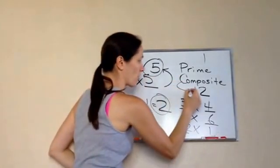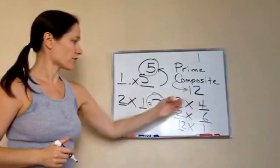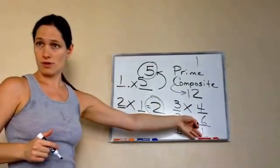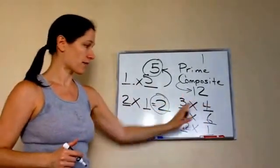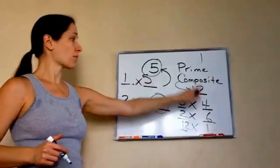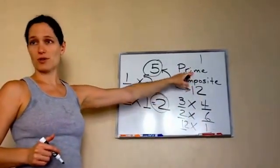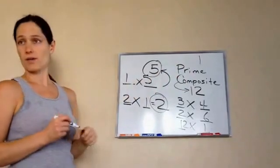So composite numbers are like 12 where you have several factors. Composite are where you have several factors. Prime is where you only have two factors and it's the number itself and 1.